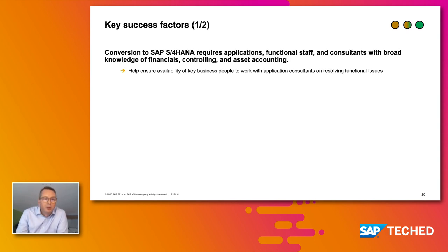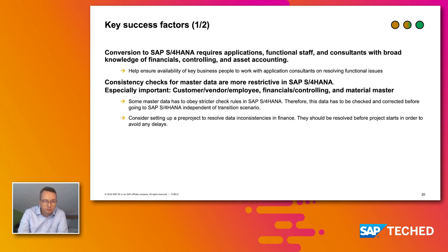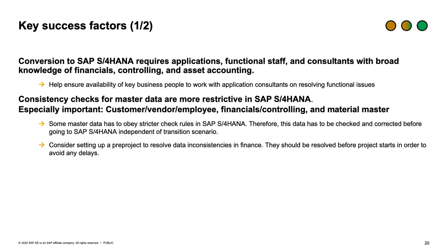Regarding success factors: conversion to SAP S/4HANA requires not only IT knowledge but also application knowledge. Include functional staff and consultants with broad knowledge of key applications — especially financials, controlling, and asset accounting — to analyze simplification items and compatibility scope, even without major re-innovation. For data consistency: SAP S/4HANA has much stricter consistency checks due to the simplified data model, so do careful pre-work to ensure data is clean enough. Consider setting up a pre-project to resolve data inconsistencies, especially in finance, starting well ahead of the main project.